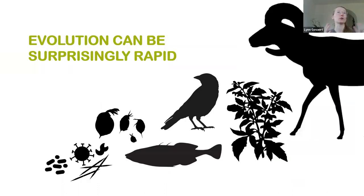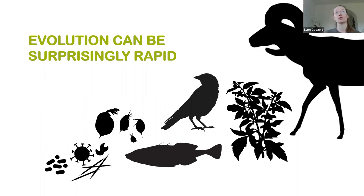Eco-evolutionary dynamics has basically come from this awareness that evolution can be surprisingly rapid and can also occur on contemporary timescales as ecological processes. Evidence of such rapid evolution has been demonstrated for wildly different organisms, varying from bacteria to plants, birds, and larger mammals.